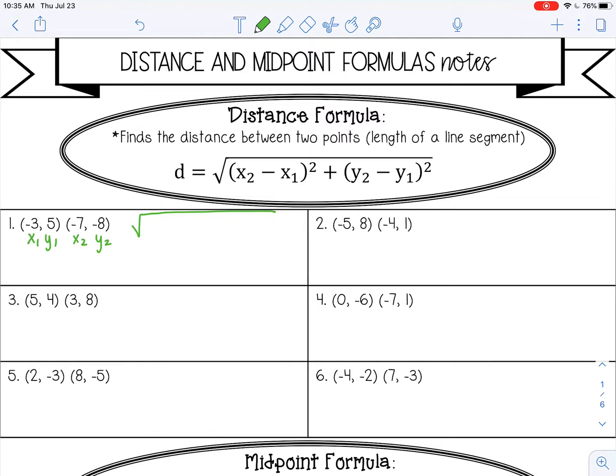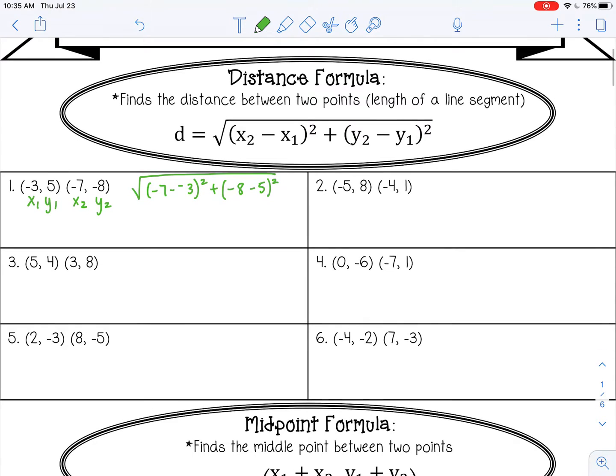So x2 minus x1, y2 minus y1, and then you can just simplify from there. So negative 7 minus negative 3, that's the same thing as a plus, so that would be negative 4 squared. Negative 8 minus 5 is negative 13 squared. That gives me 16 and 169. I'm going to add those together. That gives me 185. And then I'm going to take the square root of that, and I get about 13.6.